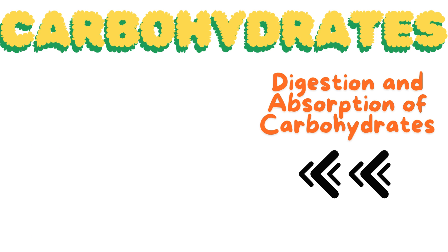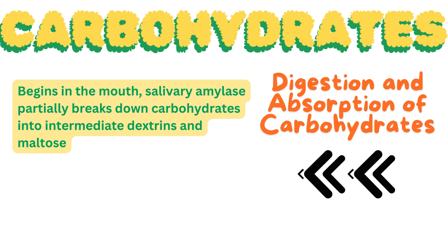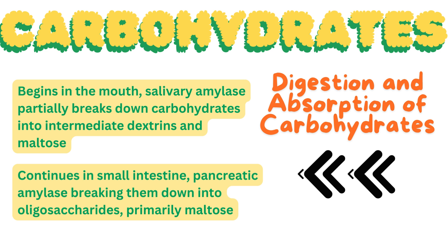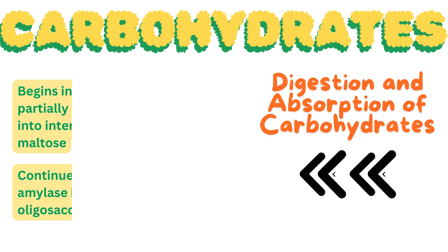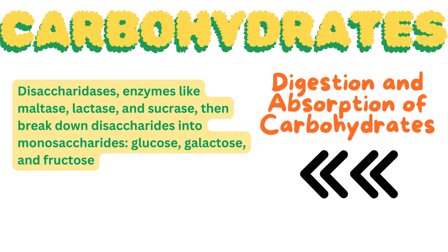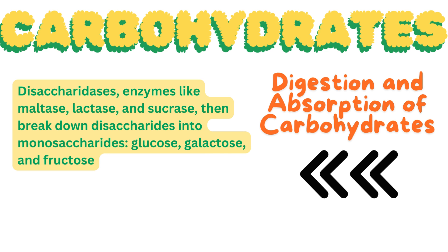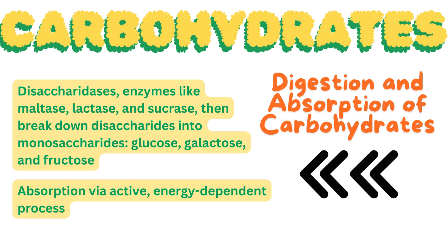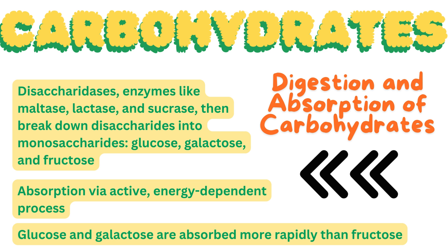The metabolism of carbohydrates begins in the mouth, where salivary amylase partially breaks down carbohydrates into intermediate dextrins and maltose. In the small intestine, pancreatic amylase takes over, breaking them down into oligosaccharides, primarily maltose. Disaccharidases — maltase, lactase, and sucrase — then break down disaccharides into monosaccharides: glucose, galactose, and fructose. These monosaccharides are absorbed via an active, energy-dependent process; glucose and galactose are absorbed more rapidly than fructose.